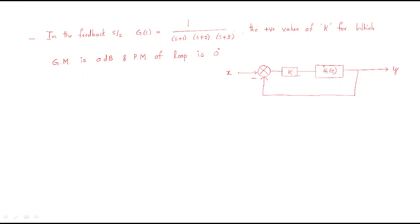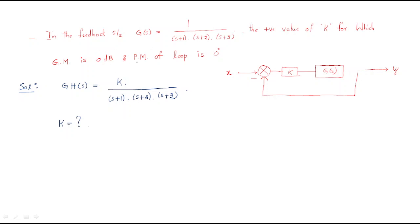First, write down the given system. The given system is GH(s) = K / [(s+1)(s+2)(s+3)]. This is the complete system — K is multiplied with the DC gain. He is asking to find the value of K, and he mentioned gain margin is 0 dB and phase margin is 0 degrees.